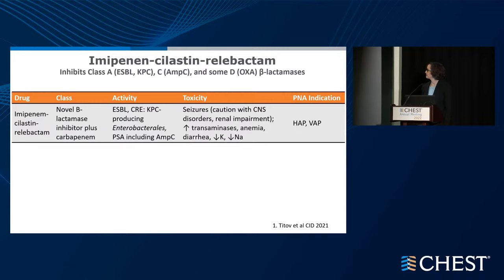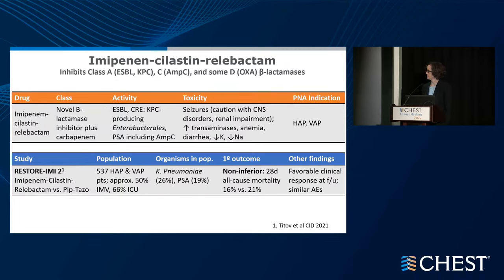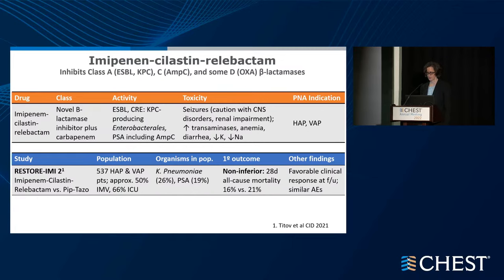Imipenem-cilastatin-relebactam has a novel beta-lactamase inhibitor plus the known carbapenem, active against extended-spectrum beta-lactamases, carbapenem-resistant Enterobacterales, and KPC-producing Enterobacterales. Given the imipenem component, seizures are a concern. It is also approved for HAP and VAP. The RESTORE-IMI study compared this to piperacillin-tazobactam in a population with about 50% on invasive mechanical ventilation and two-thirds in the ICU. Klebsiella and pseudomonas were common organisms, and it was found non-inferior in terms of all-cause mortality at 28 days, with favorable clinical response at follow-up and similar adverse events.